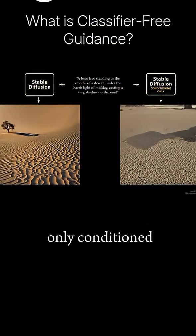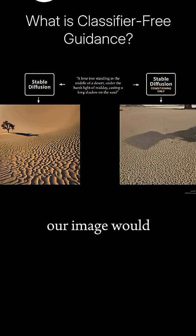Earlier, we saw that if we only conditioned our stable diffusion model, our image would have a desert and a shadow, but no tree that we asked for in the prompt.